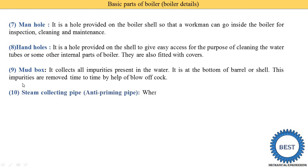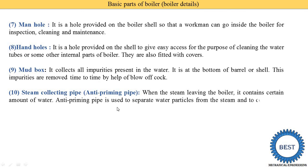The next part is the steam collecting pipe, also known as the anti-priming pipe. Steam is generally collected in the upper part of the shell. When steam leaves the boiler, it contains a certain amount of water, which is known as wet steam. The anti-priming pipe is used to separate the water particles from the steam and collect only dry steam from the boiler, which is then supplied wherever it is required.